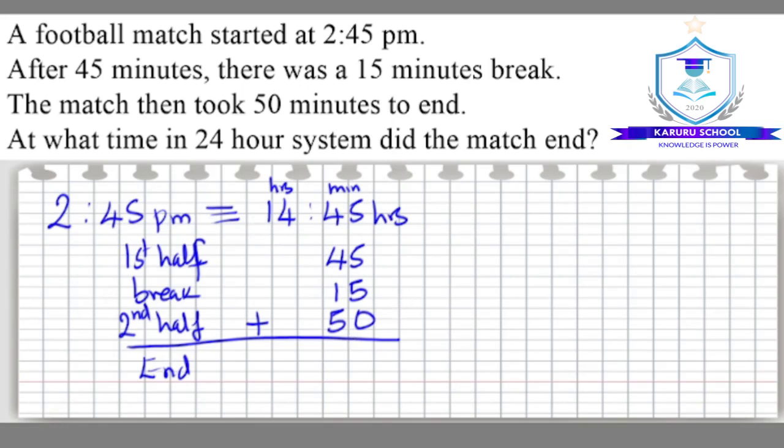So we can do this on the side. We have 45 plus 45 plus 15 plus 50. We add all these and then we get the time in minutes. So we have 5 plus 5 gives us 10 plus 5 gives us 15, 15 carry 1. So we have 1 plus 4 gives us 5 plus 4 gives us 9 plus 1, 5 plus 5 plus 5 gives us 15, 15 carry 1. So we have 155 minutes.